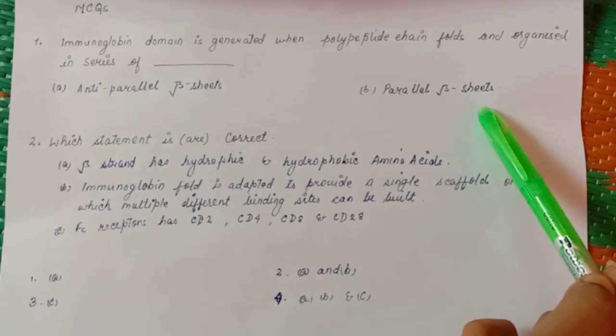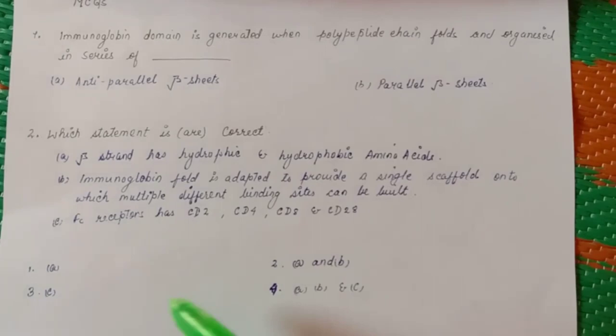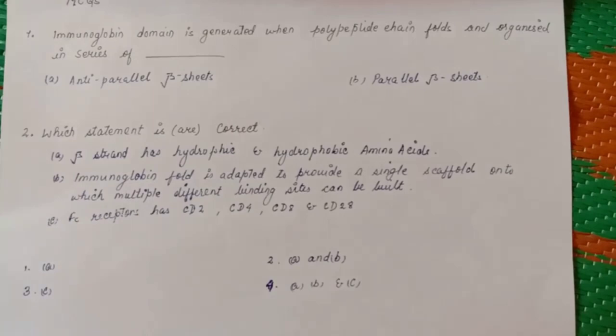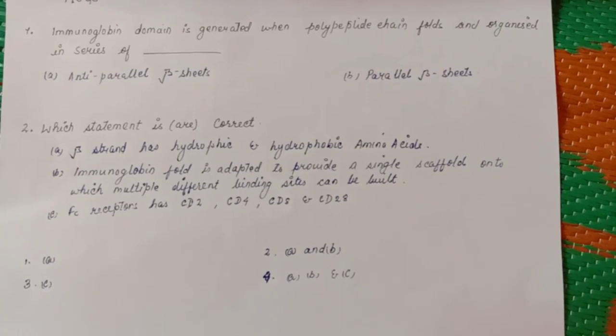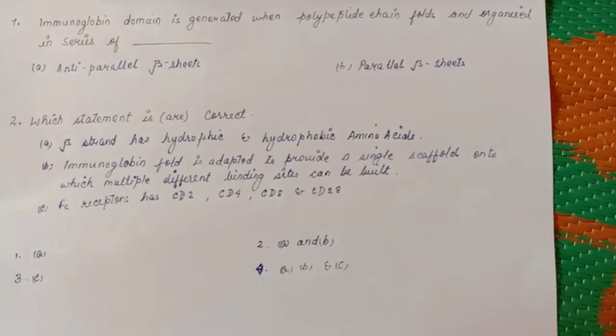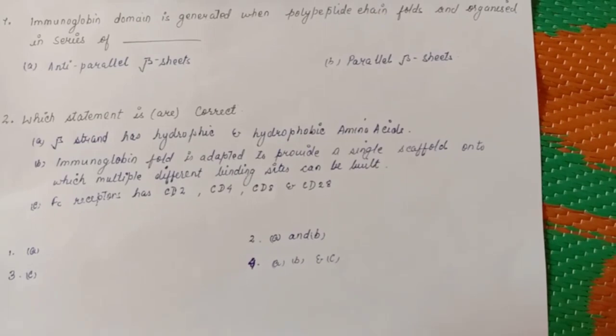The next question is which statement is or are correct. You have to choose one from the given options. The first statement is beta strand has hydrophobic and hydrophilic amino acid. B statement is immunoglobulin fold is adapted to provide a single scaffold into which multiple different binding sites can be built. Then we have FC portion has CD2, CD4, CD8 and CD28.